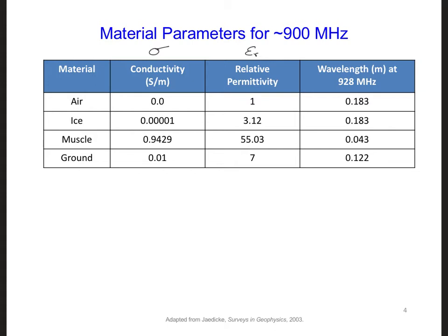Snow is basically a mixture of ice and air, so the dielectric constant of snow is in between the dielectric constant, the relative permittivity here, of air and ice. So snow epsilon r is about 1.6. And the conductivity of snow is probably going to be very, basically, zero.